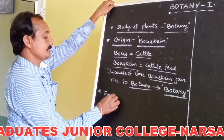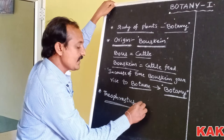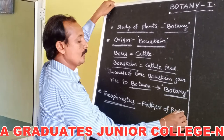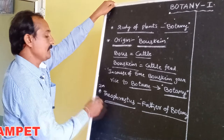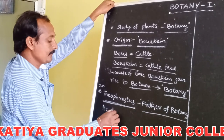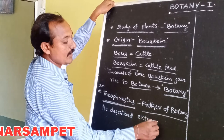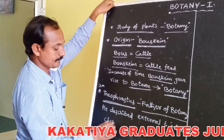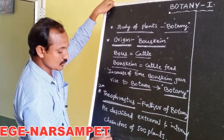Theophrastus is the father of Botany — this is a two-mark very important question: who is the father of Botany and which book was written by him? Theophrastus described the external and internal characters of 500 plants in his book 'Historia Plantarum.'